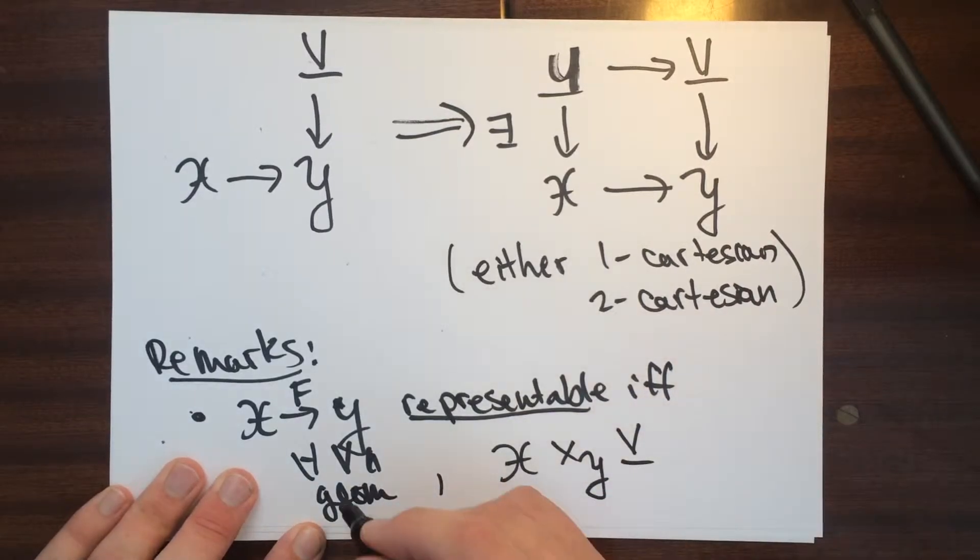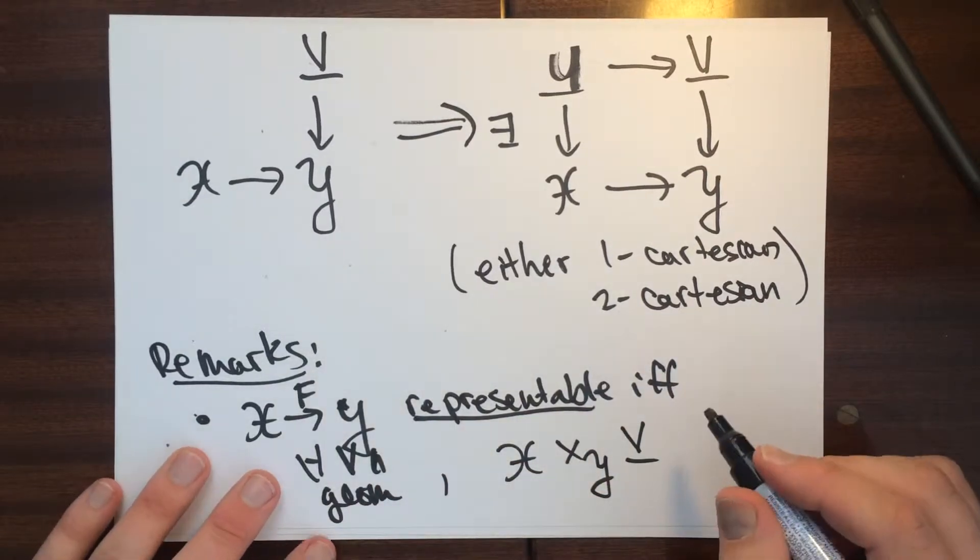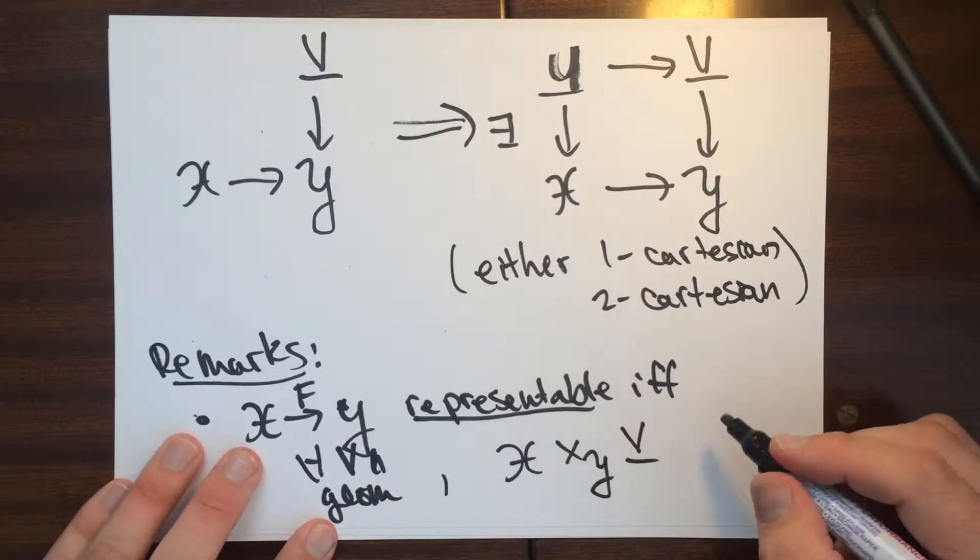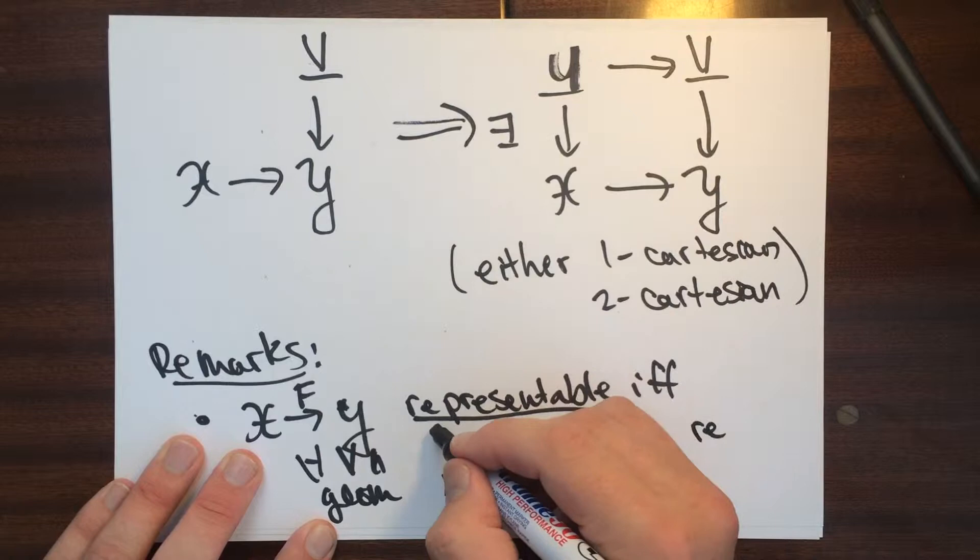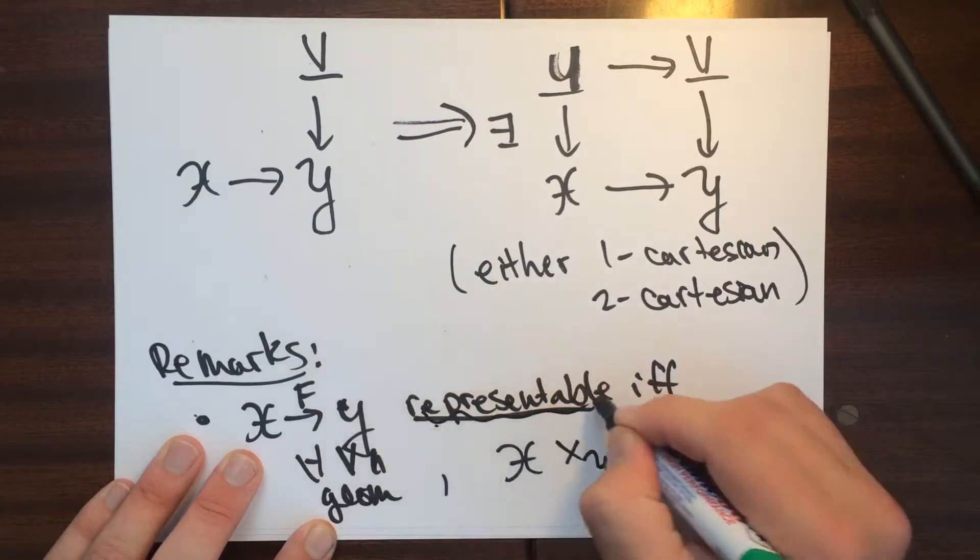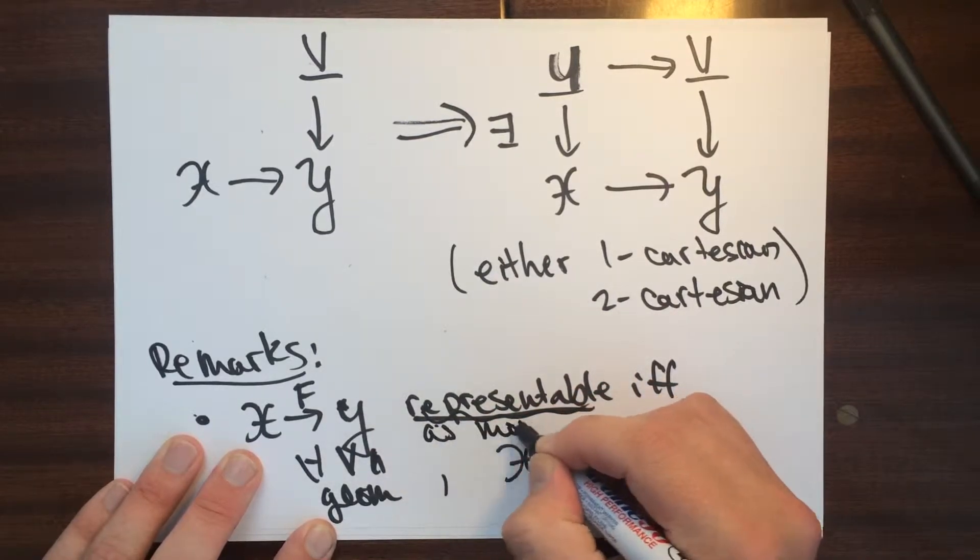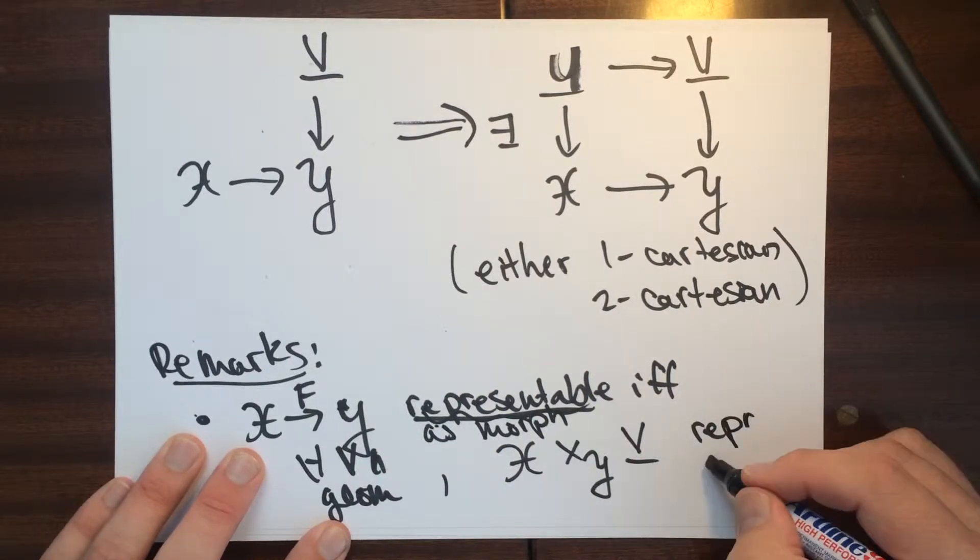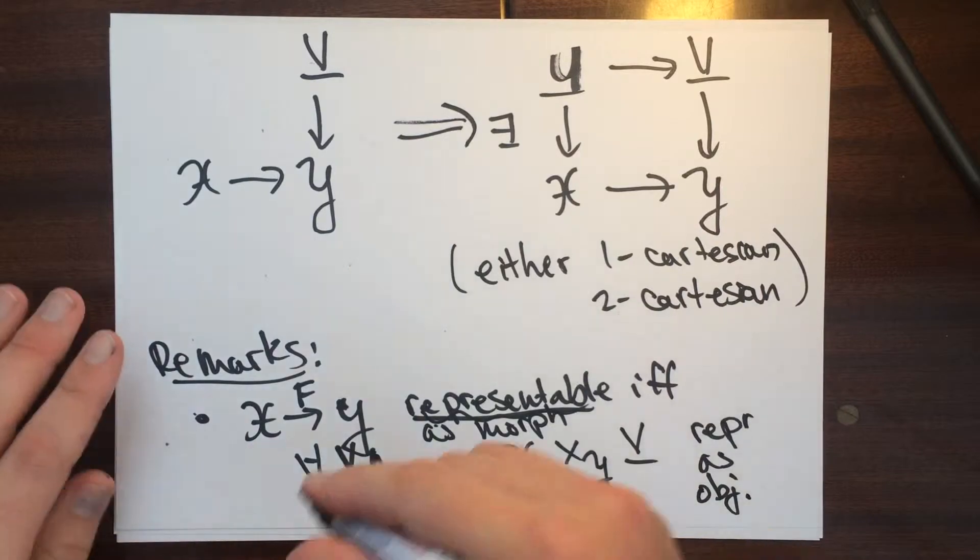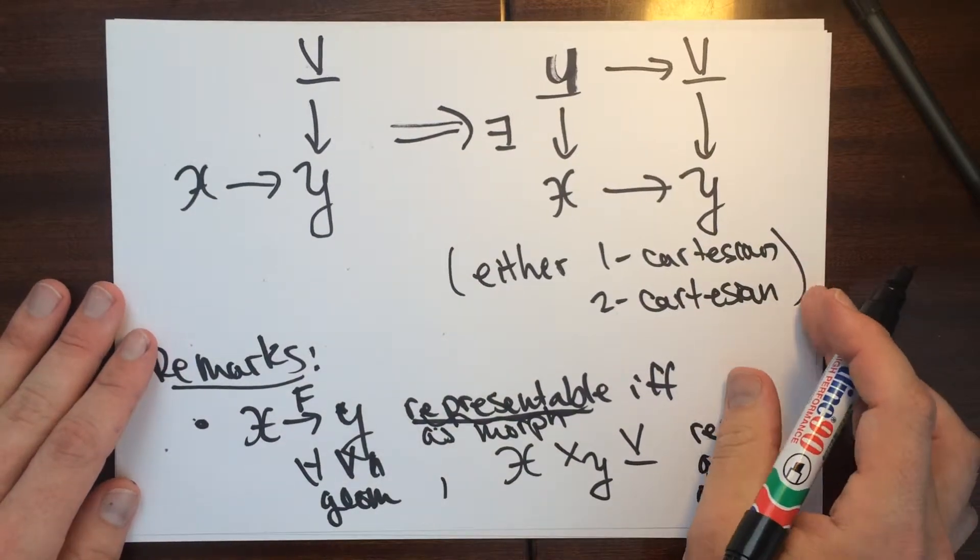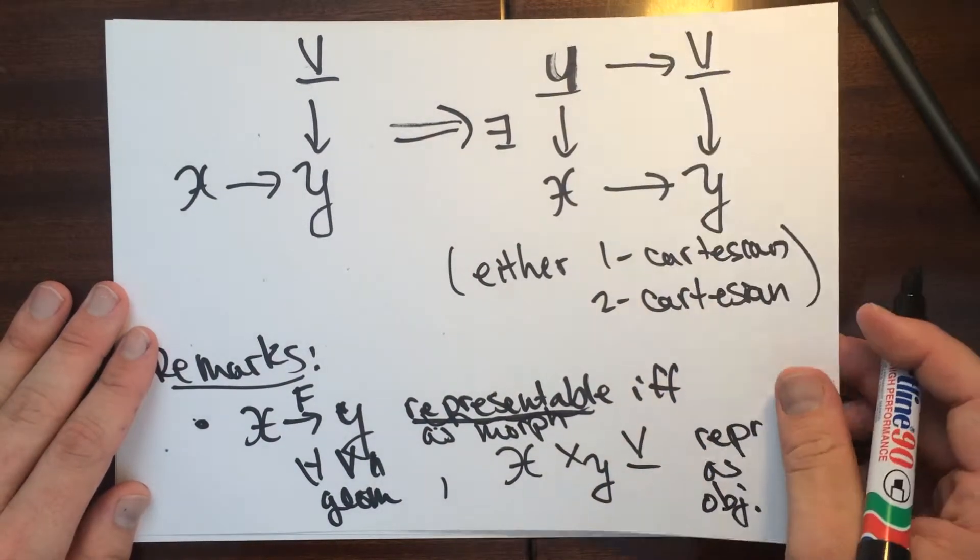So we should think of this being a scheme. It can actually be an algebraic stack too. So this thing is representable as an object. As a morphism, sorry, this shouldn't be underlined. As a morphism, this is representable as an object. And then you could do one representable or two representable, depending on the flavor.